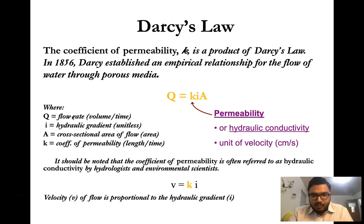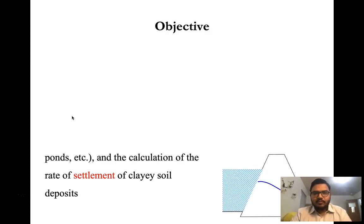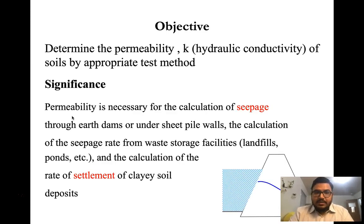The velocity of flow is proportional to the hydraulic gradient, and this proportionality constant is referred to as the coefficient of permeability. The objective of this test is to determine the permeability of soil by any appropriate test method. Permeability is a significant parameter for geotechnical purposes.